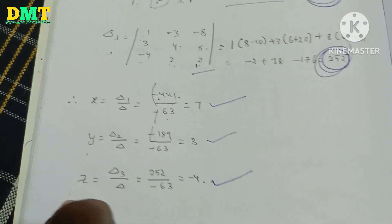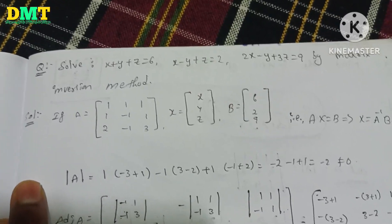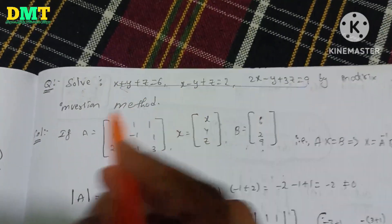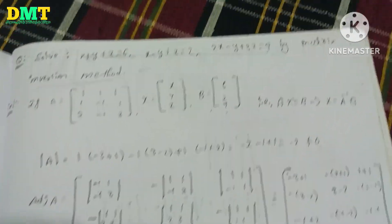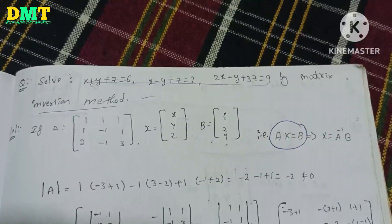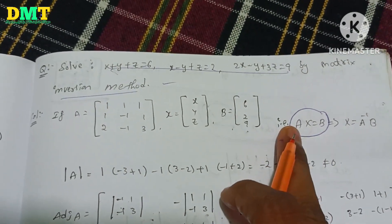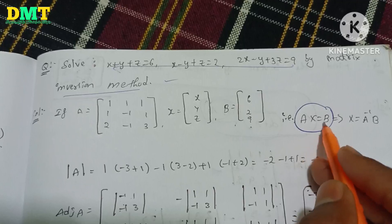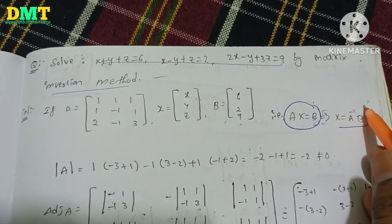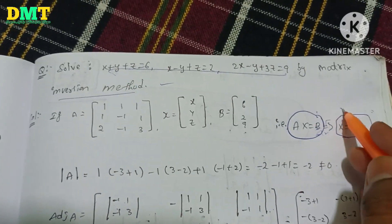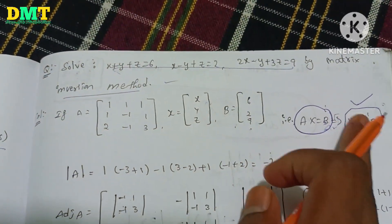The first method is the Matrix Inversion Method. This is a 5-mark example. We can find the Matrix Inversion Method using the equation AX equals B, a non-homogeneous equation. X equals A inverse B. So x is equal to A inverse B — find out.